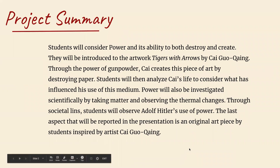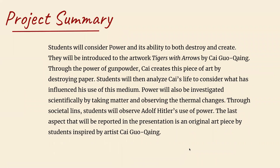Project Summary. Our students will consider power and its ability to both destroy and create. They will be introduced to the artwork Tigers with Arrows by Tsai Guocheng through the power of gunpowder. Tsai creates this piece of art by destroying paper. Students will then analyze Tsai's life to consider what has influenced his use of this medium. Power will also be investigated scientifically by taking matter and observing the thermal changes. Through a societal lens, students will observe Adolf Hitler's use of power. The last aspect reported in the presentation is an original art piece by students inspired by artist Tsai Guocheng.